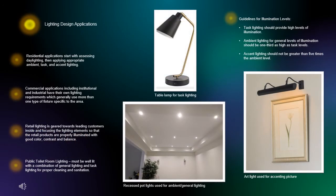There are a variety of lighting design applications. In residential applications, you start by assessing daylighting, then applying appropriate ambient, task, and accent lighting. For commercial applications, including institutional and industrial, they have their own lighting requirements, which generally use more than one type of fixture specific to the area. In retail lighting, it is more geared towards leading customers inside and focusing the lighting elements so that the retail goods are properly illuminated, ensuring good color contrast and balance so that the products are properly displayed.